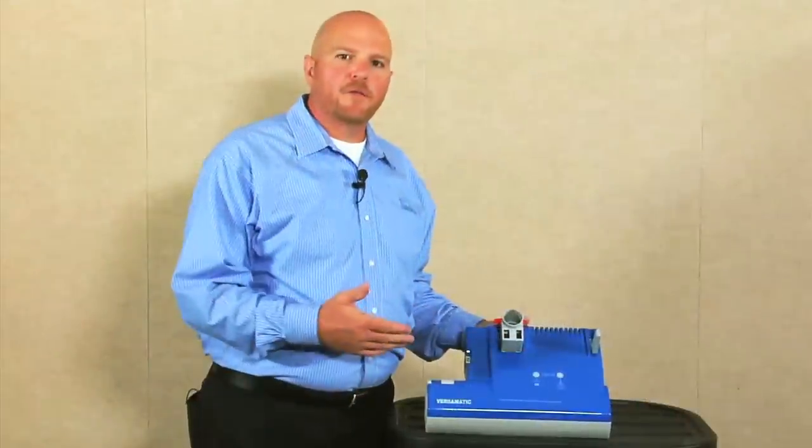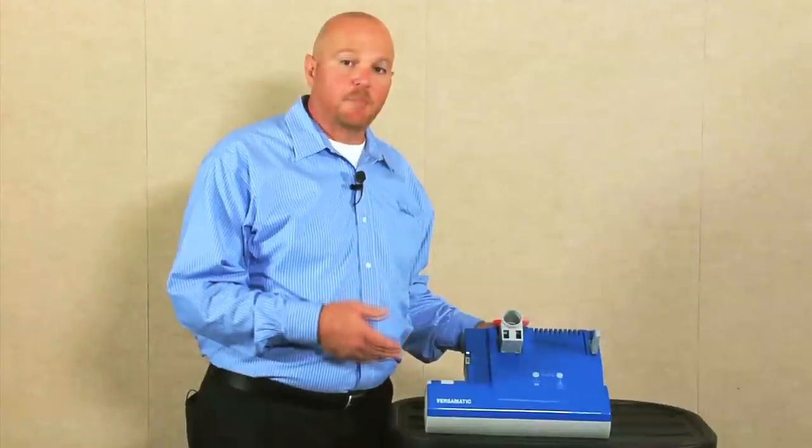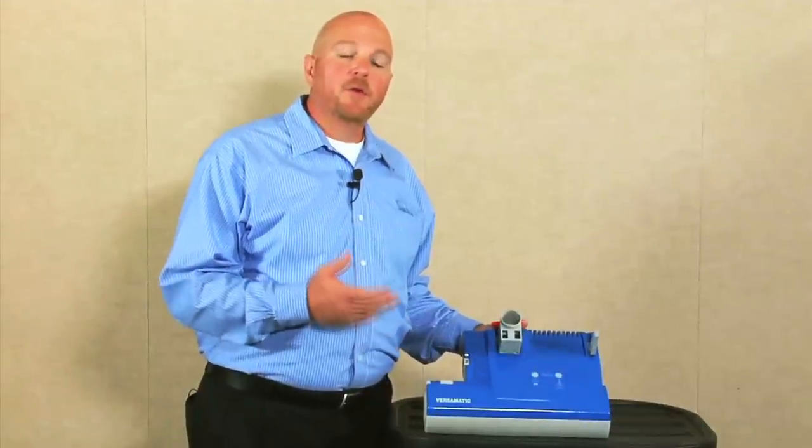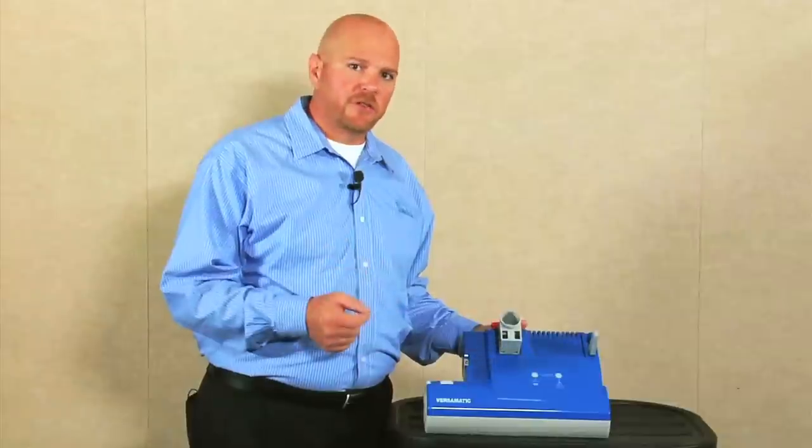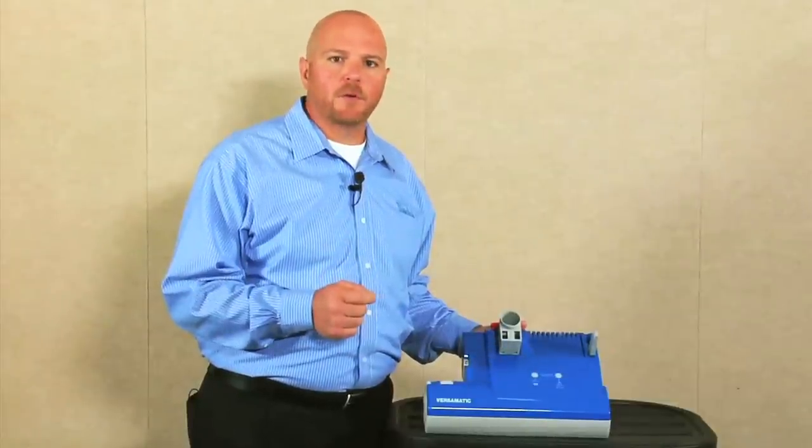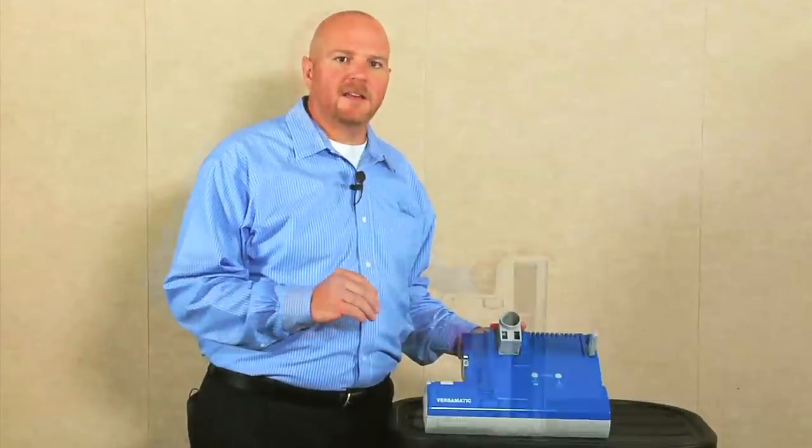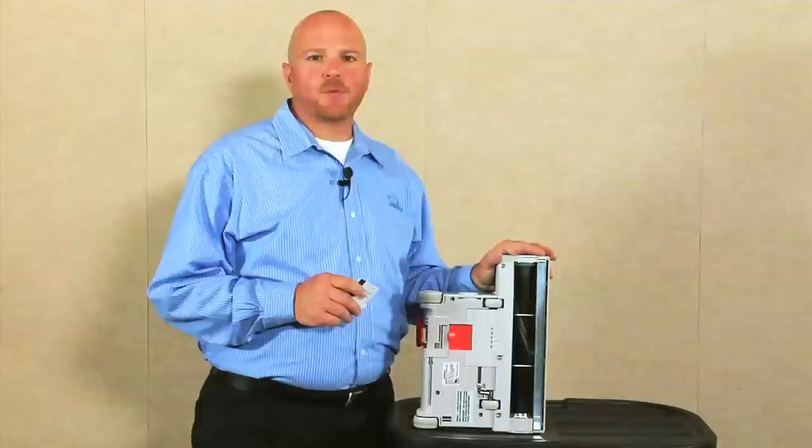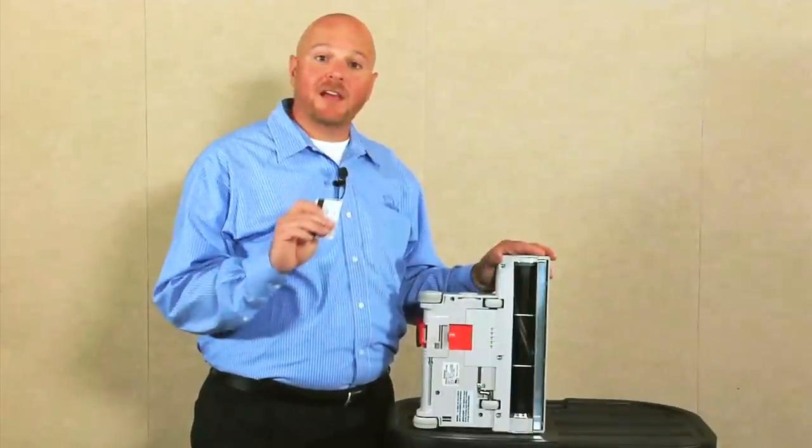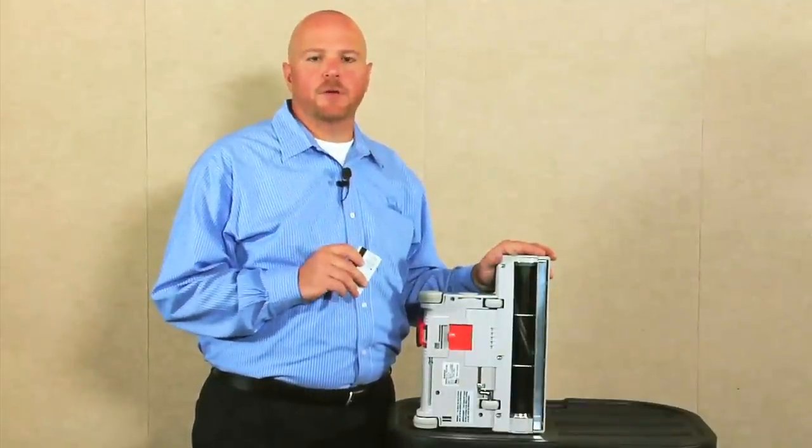On the front of the Versimatic you'll find the check brush light and brush ok light. Those lights tell you whether the brush is adjusted properly and in good working order. If the green brush ok light is on you're set. If the orange check brush light comes on and there's no debris blocking the brush, you'll need to check to make sure the brush is still in good working order.